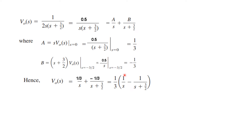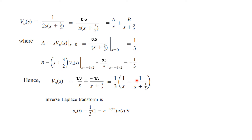Taking the inverse Laplace transform of the partial fraction result, V_o(t) = (1/3)u(t) − (1/3)e^(−3t/2) u(t). Here, 1/S corresponds to u(t) and the exponential term follows directly from the standard formula. This completes the third part.